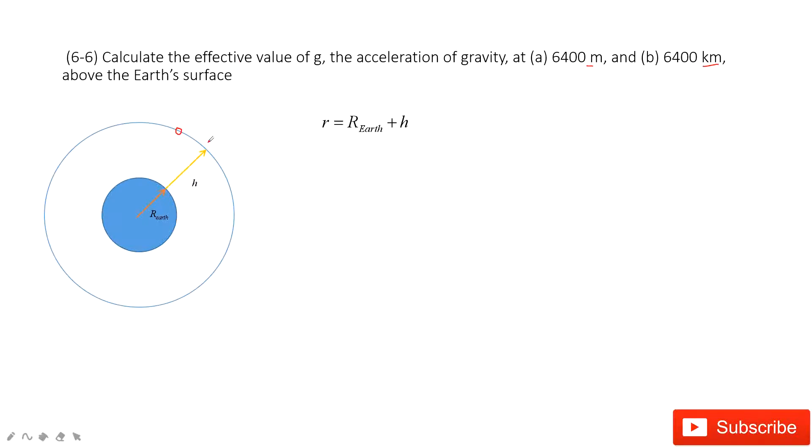The radius for the object doing this central motion is just the radius of the Earth plus the distance above the surface of the Earth.